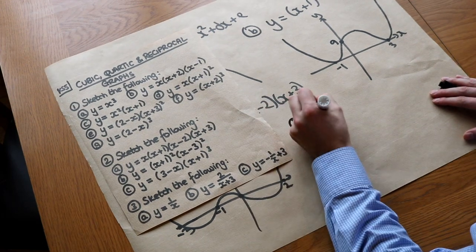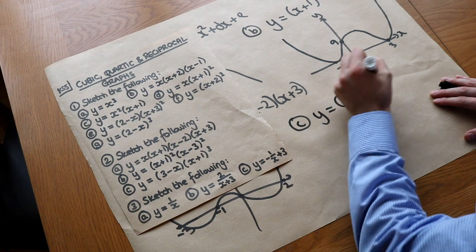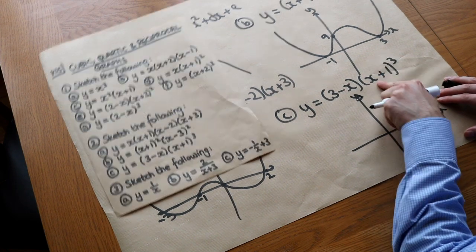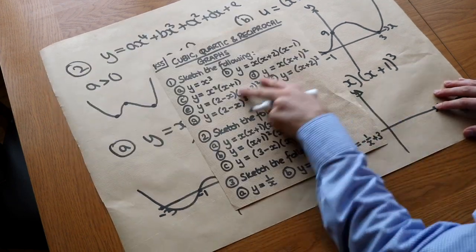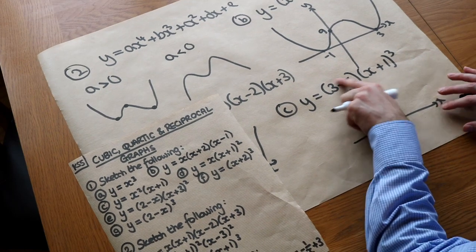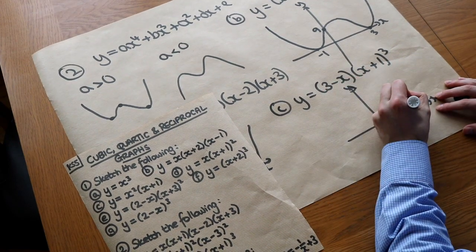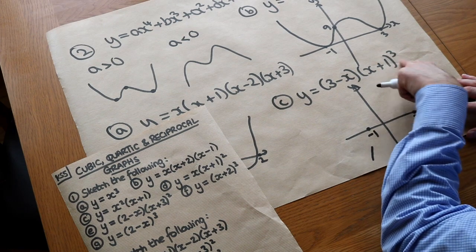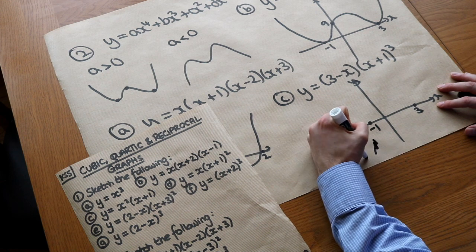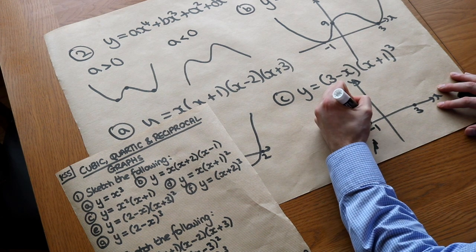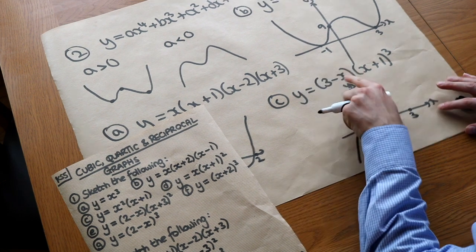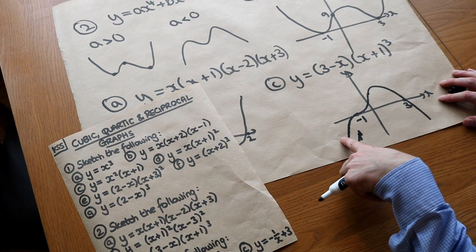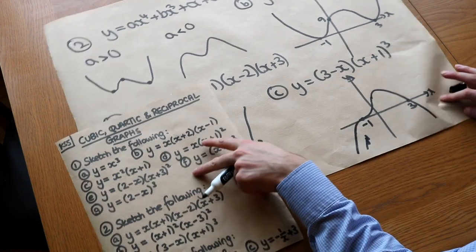For the final quartic, y equals (3-x)(x+1)³. This is a negative quartic because minus x times x times x times x gives minus x⁴. The roots are at 3 and minus 1. The minus 1 has a triple repeated factor, giving a point of inflection there, and the curve still goes up through it. Then it crosses at 3 because that's not repeated. There are still three turns — turns right, then left, then right.